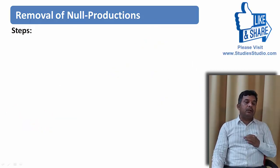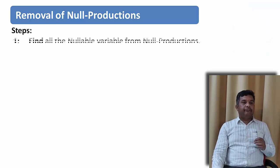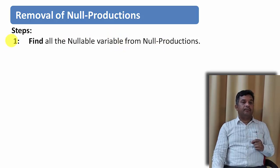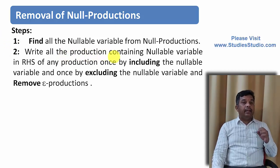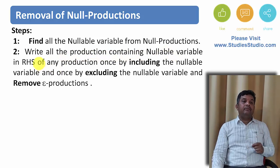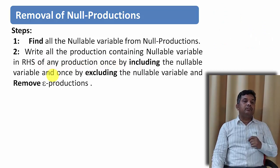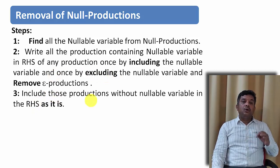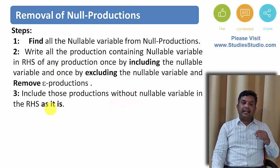To remove null productions, we follow three steps. First, find all nullable variables from the null productions. Second, for every production containing a nullable variable on the right-hand side, write it once including the nullable variable and once excluding it, then remove the epsilon production. Third, include any productions that have no nullable variable on the right-hand side as they are.